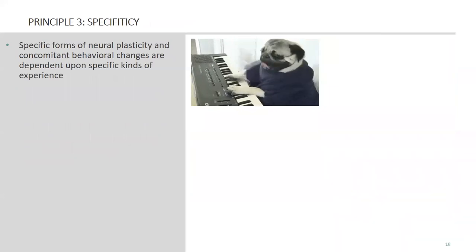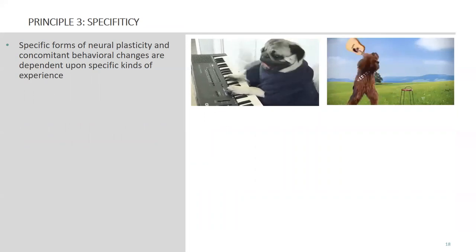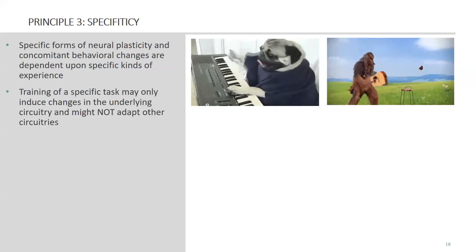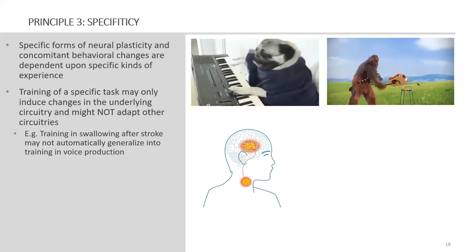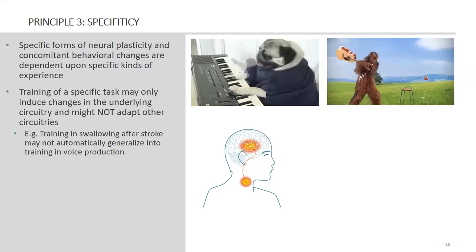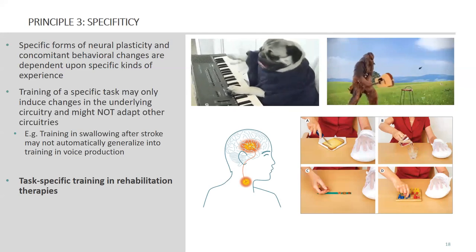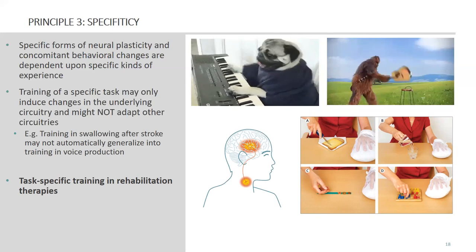The specificity of the training is also a principle that has to be addressed. You can appreciate this when trying to learn the piano — this does not automatically translate into being able to play the guitar. Along those lines, if you train one specific task during rehabilitation, you won't necessarily be better in other tasks. One example is if you train a patient to swallow after a stroke — this does not mean they will also get better in producing sound or voice, even though the same area is affected. Both tasks are steered by a very specific motor engram, and each engram has to be trained separately. In clinical care, this can be taken into account by training very specific tasks the patient will need to enhance their quality of life — for example, using a knife to spread butter on toast, pouring water, or placing small objects.